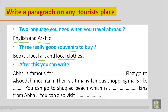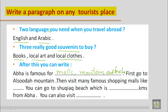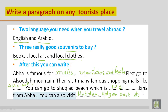Suppose we have chosen Abha as the tourist place. You can say: Abha is famous for malls, mountains, and beaches. First go to Al Sudha mountain, then visit famous shopping malls like Abha Mall. You can go to Shokek Beach, which is 120 kilometers from Abha. You can also visit Habbala and Dalgan Park, etc.